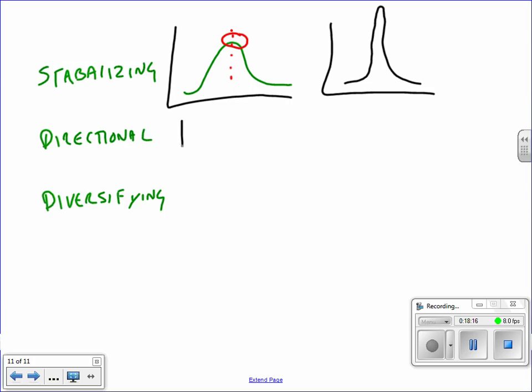Directional selection is when you end up having one of the phenotypes on one of the sides of the curve that gets selected for. So we're going to start choosing here, so this side of the graph is going to get more and we're going to start decreasing on the other phenotypes. You're going to see the graph moving one direction. In this case we're pushing to the right, but you can push to the left as well. Maybe it's more advantageous because the environment is getting harsh to be a smaller individual because then you don't need as many resources, so you'd be pushing the graph to the left.